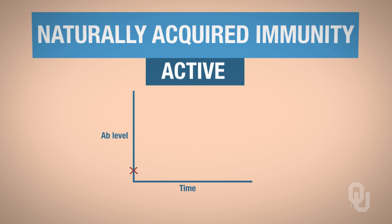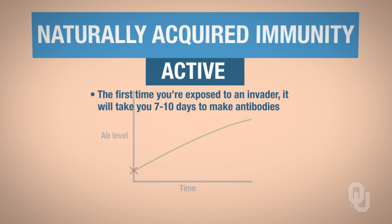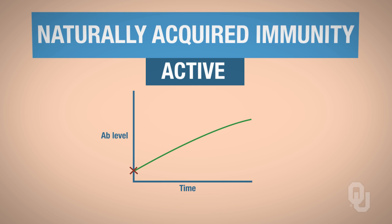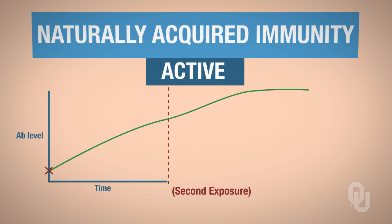Your antibody level is going to start off low at time zero, where you don't have any antibodies yet because you haven't been exposed. Once you become exposed, your body will produce antibodies. Remember, the first time you've been exposed to the invader, it's going to take seven to ten days to make antibodies. Your level goes up and plateaus. Now if you get exposed for a second time to the same antigen, that antibody level will go up again. Eventually this level would plateau and then start to decline a little, because those antibodies are not going to survive forever.